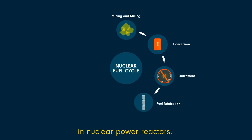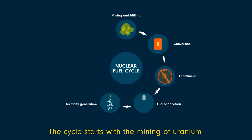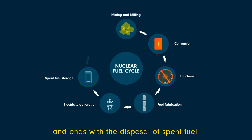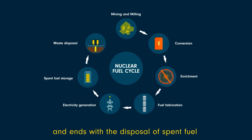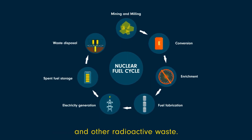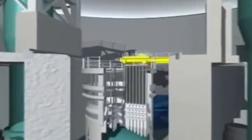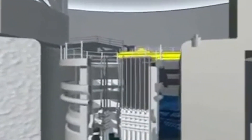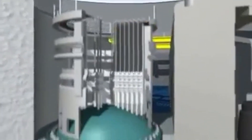The nucleus of an atom is held together with a great force — the strongest force in nature. When bombarded with a neutron, it can be split apart, a process called fission, because uranium atoms are so large.